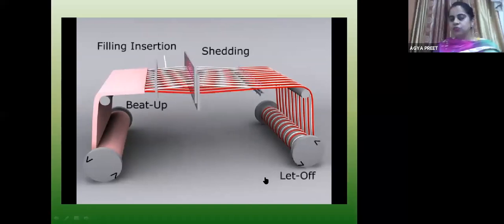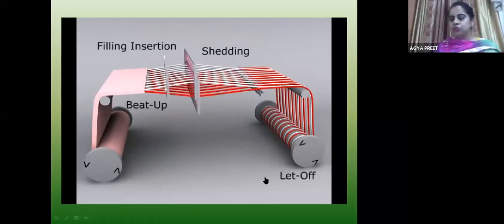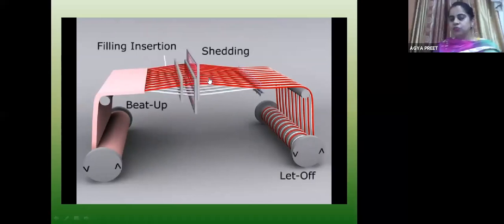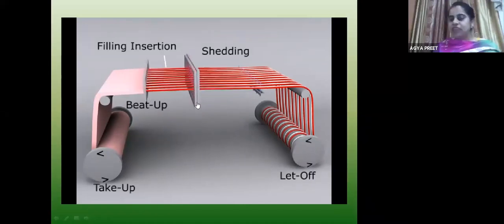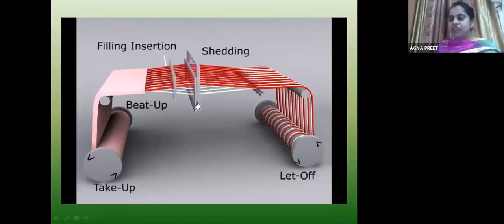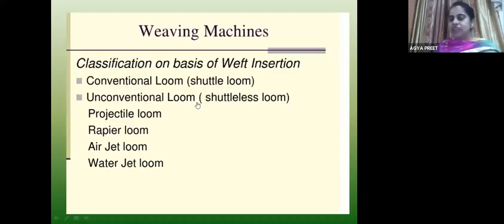I have also talked about auxiliary motions. When you have a warp break or a weft breakage, it will affect weaving. To stop that problem, auxiliary motions are inserted into the loom. The motions are activated and indicate to the operator that there is some problem — you can see a light blink, and you go there and rectify the issue and the loom starts again.